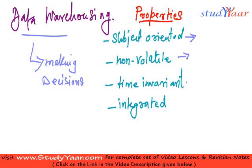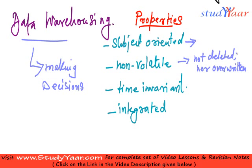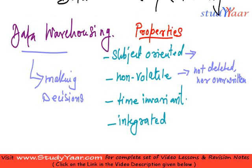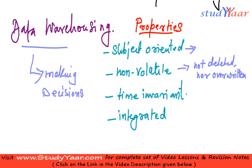What do we mean by non-volatile? Non-volatile means my data in the data warehouse is not deleted or overwritten. My data stays there once I have put it into my data warehouse. Subject oriented means it is not random data, but pertaining to one particular organization or pertaining to a particular subject.